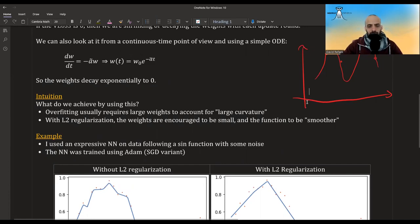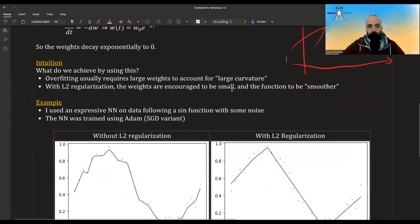It needs big weights in order to really do crazy maneuvers and fit all the points. The L2 regularization encourages the weights to be small, and then it can't do all these crazy maneuvers. It tries to find a smoother function to fit the points. So this is the intuition.